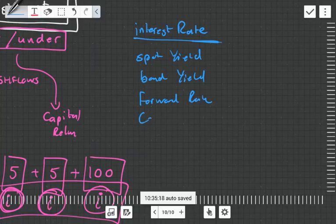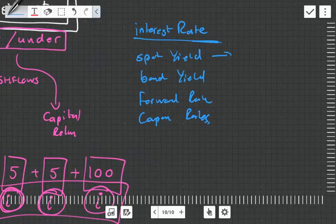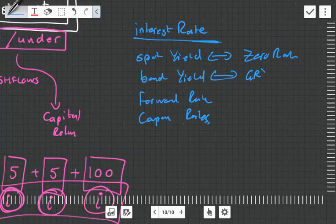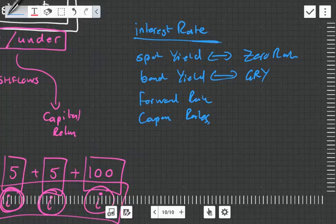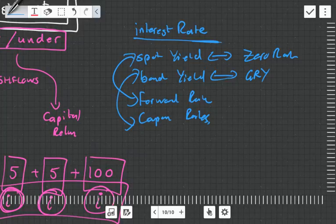We get coupon rates, and then to make it even more complicated these things have different names as well. Spot yield is also known as your zero rate, your bond yield is also known as your gross redemption yield. It does get terribly confusing, there's so many of these things. There are various formulas to see how they all link up to each other.